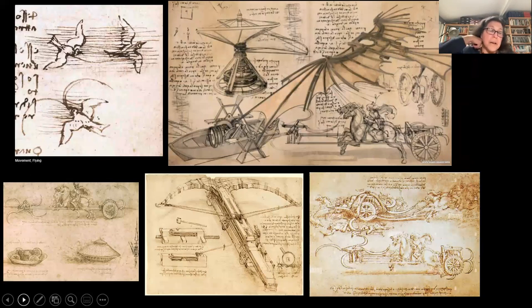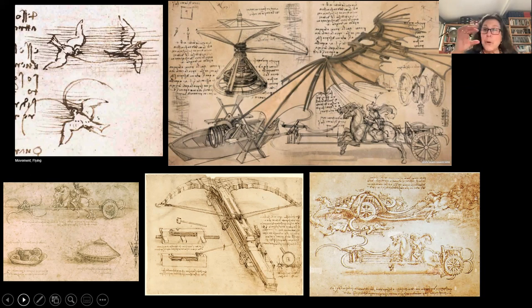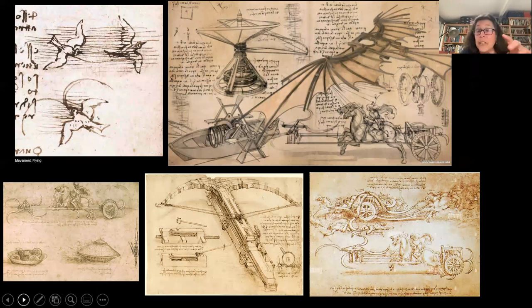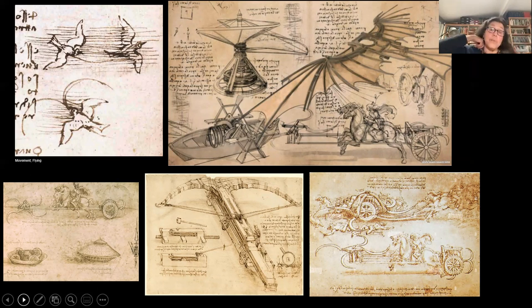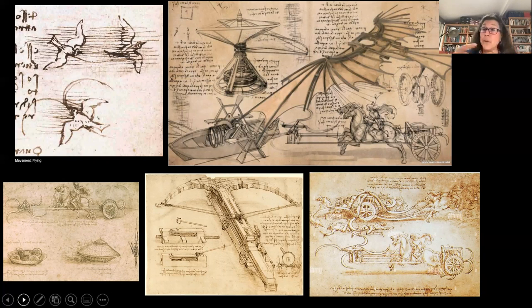One of the things Leonardo was most taken with throughout his life was birds and the idea of flight. He documented bird flight, the wingspans, birds in movement. Then he went on to create hundreds of inventions — particularly war machines for the great rulers, particularly in Milan and Florence — which never came to fruition. But he was an engineer who understood the mechanics of nature and transcribed them into mechanical means to create machinery.